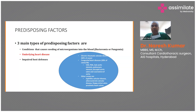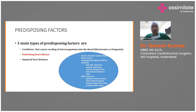Underlying heart conditions that predispose to infective endocarditis include rheumatic heart disease, mitral valve prolapse, and congenital heart diseases such as VSD (ventricular septal defect), PDA, pulmonary stenosis, bicuspid aortic valve, coarctation of aorta, syphilitic or atherosclerotic valve disease, and floppy mitral valve with myxomatous changes. Any of these can cause a breach in the endothelium, attracting platelet aggregates on which microorganisms can settle and colonize.